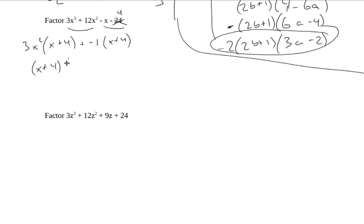So the x plus 4 and the x plus 4 match up. So we end up with x plus 4. From the first parentheses, we get 3x squared. And from the second parentheses, we get minus 1.